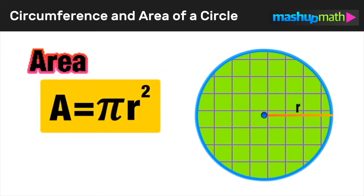Now that you understand the key difference between circumference — the outside of the circle — and area — the inside of the circle — let's take a look at a few practice problems on how to apply these formulas to find both the circumference and area of a circle.